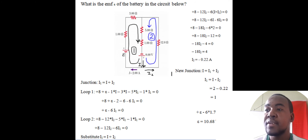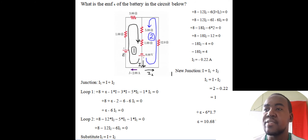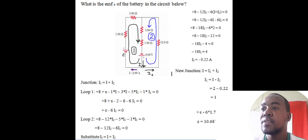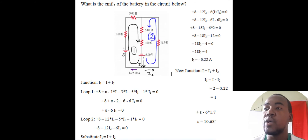For loop 2, going anti-clockwise — this shows you get the correct answer regardless of direction. Starting at the battery: positive 8V. Going up through the 12-ohm resistor with I2 also going up — negative 12·I2. Then down through the 5-ohm and 1-ohm resistors with I1 — negative 5·I1 minus 1·I1 = 0.